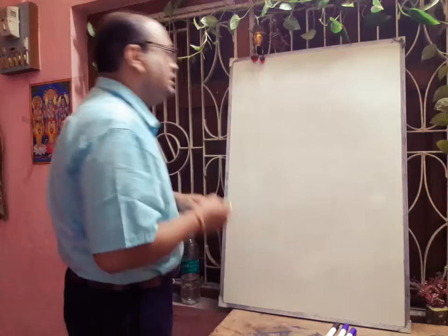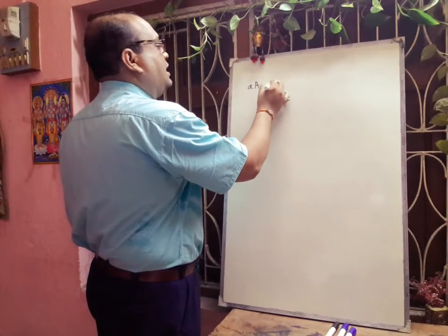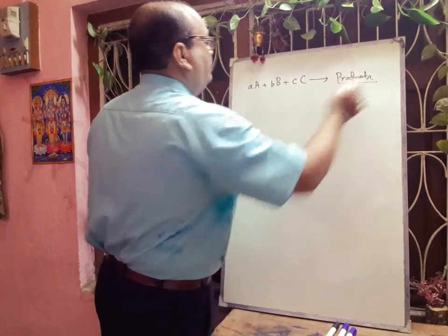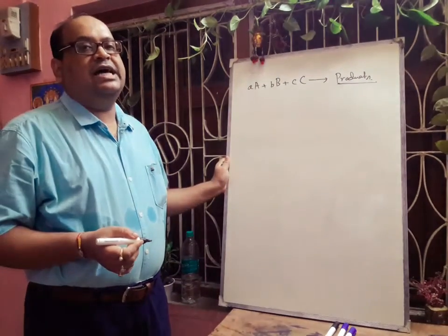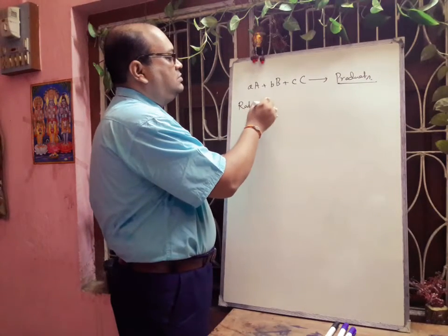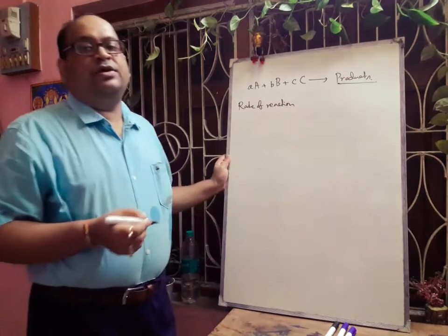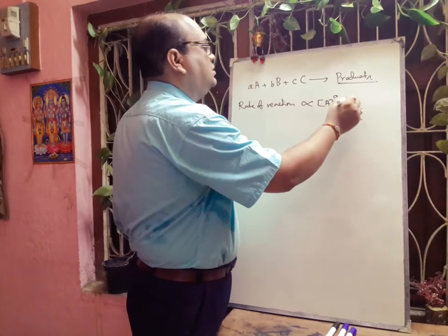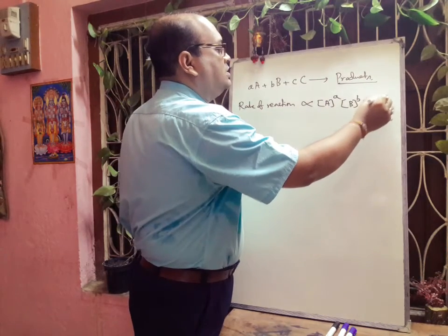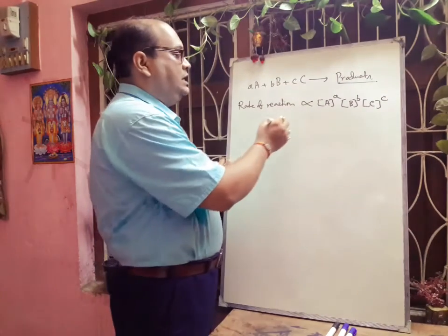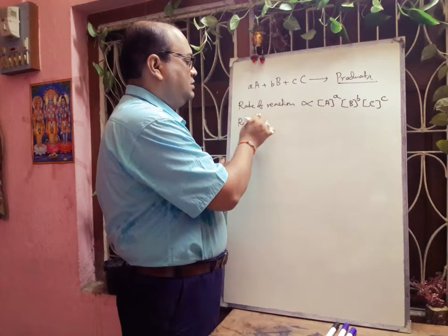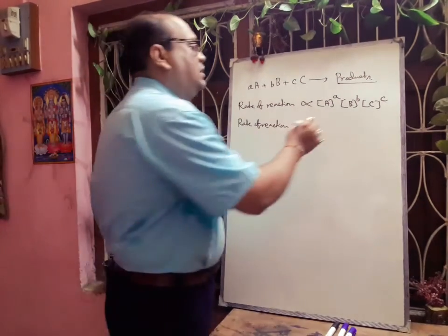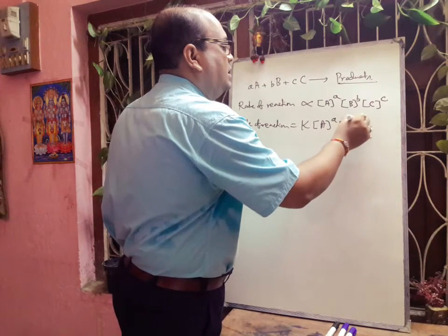Suppose we consider the reaction aA plus bB plus cC forming one product. The rate of reaction, according to the law of mass action, will be proportional to concentration of A to the power a, into concentration of B to the power b, into concentration of C to the power c. Writing this as an equation, rate equals K into [A]^a into [B]^b into [C]^c.